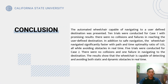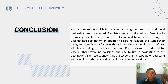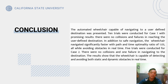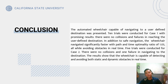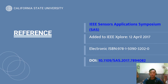In conclusion, the automated wheelchair capable of navigating to a user-defined destination was presented. Ten trials were conducted for Case 1 with promising results — there were no collisions and no failures in reaching the destination. The wheelchair also navigated significantly faster with a path and time optimal ratio of 1.03, while avoiding obstacles in real time. For Case 2, there were no collisions and one failure in navigating to the destination. The results show the wheelchair is capable of detecting and avoiding both static and dynamic obstacles in real time.